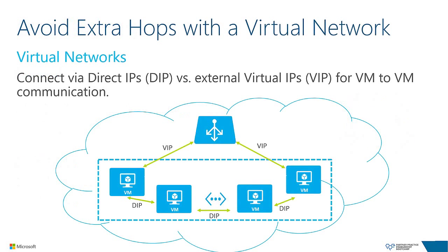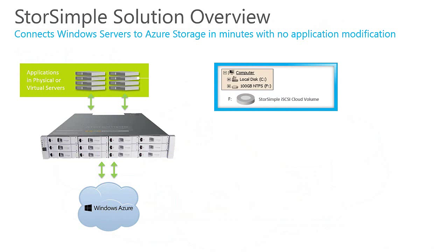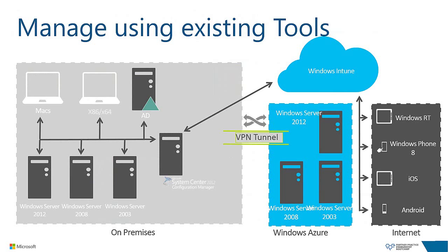To lower latency, try to have workloads on the same virtual network — avoiding extra hops through the load balancer will decrease latency. For hybrid cloud storage, Microsoft StorSimple connects on-premises server storage directly to Windows Azure with little configuration, allowing primary storage to be offloaded to the cloud and reducing enterprise storage total cost of ownership by 60-80%. Additionally, you can reuse existing on-premises management tools in Windows Azure — System Center paired with a site-to-site virtual network lets you manage and monitor cloud VMs the same way you manage your own environment.